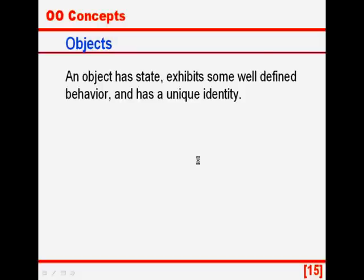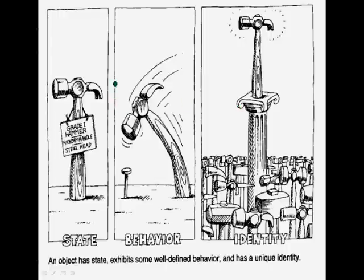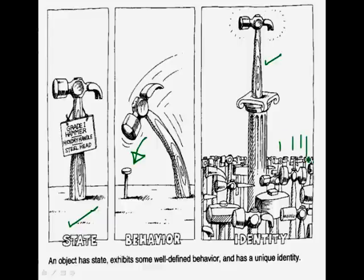What is an object? Again the definition from Grady Booch: an object has state, exhibits some well-defined behavior and has a unique identity. This is the picture from the Booch book. The hammer looks like this — it has a state and a behavior; the hammer is used to hit nails, and every hammer is different from the other hammers.